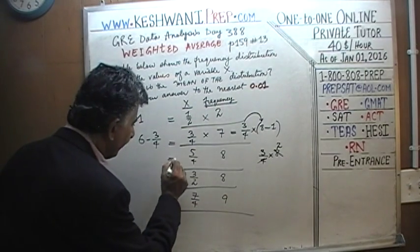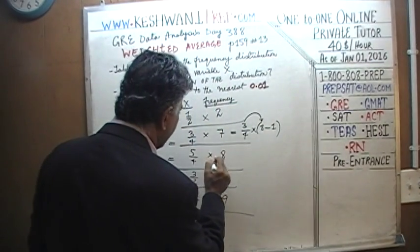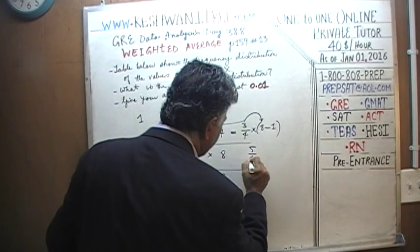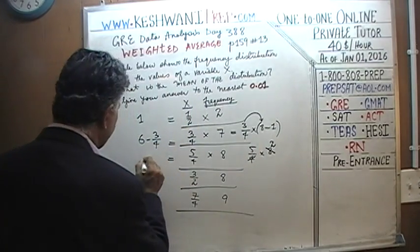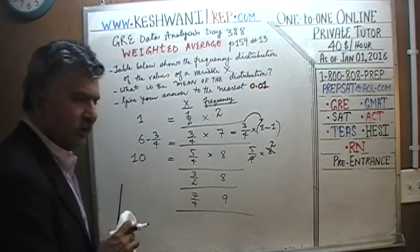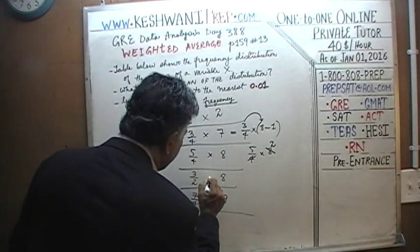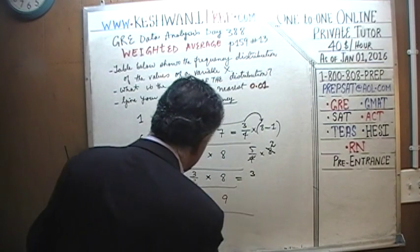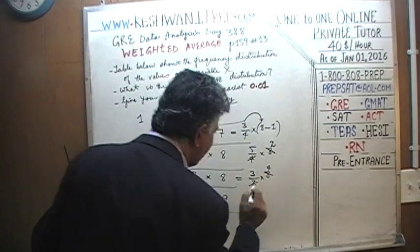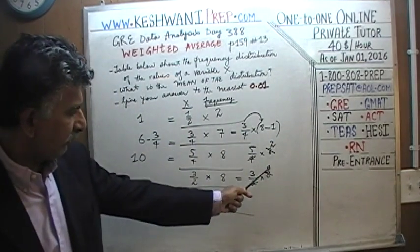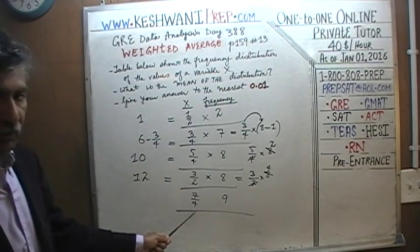The next one is also very easy: five-quarters times eight. Five-quarters times eight — the four cancels out with eight, giving us two, and it's five times two, which is simply ten. The one after that is also straightforward: three-halves times eight. Eight cancels out with two, giving four, and three times four is twelve.